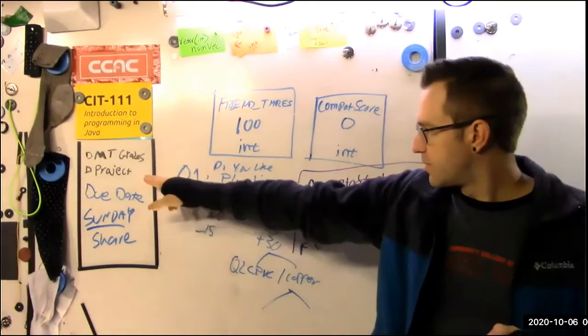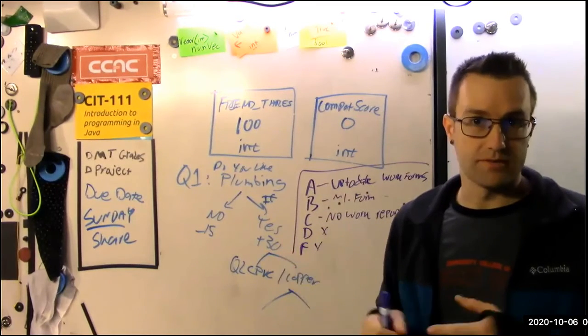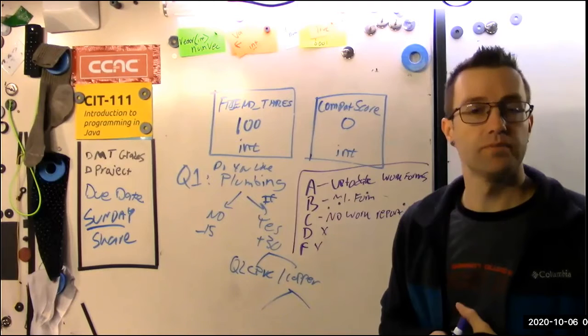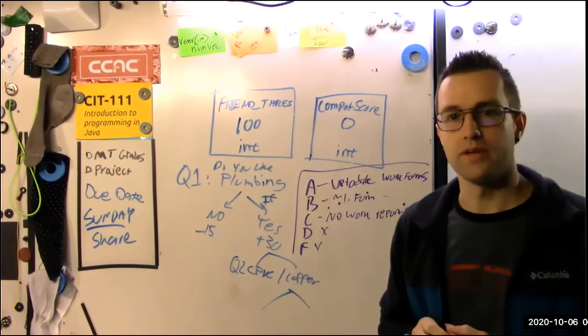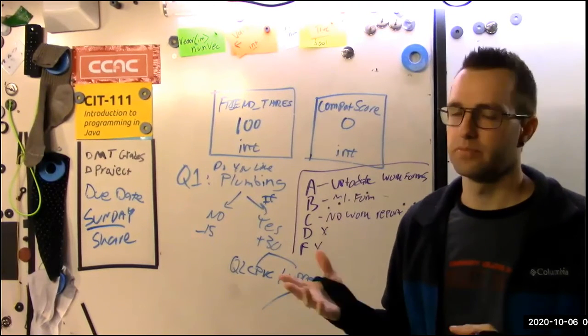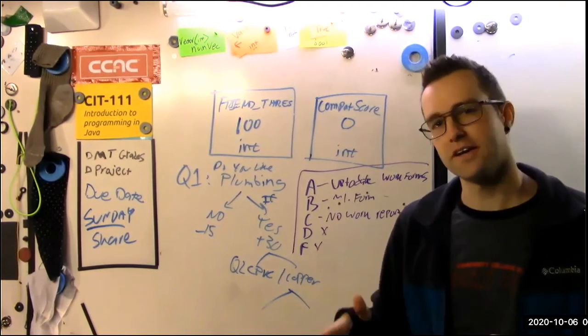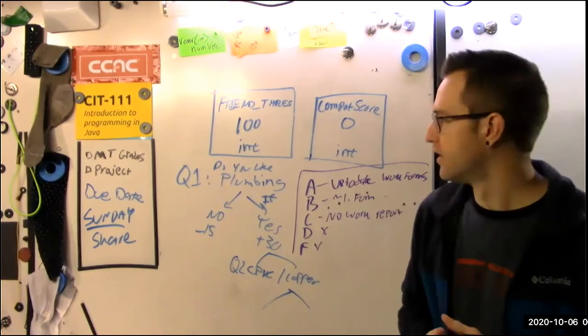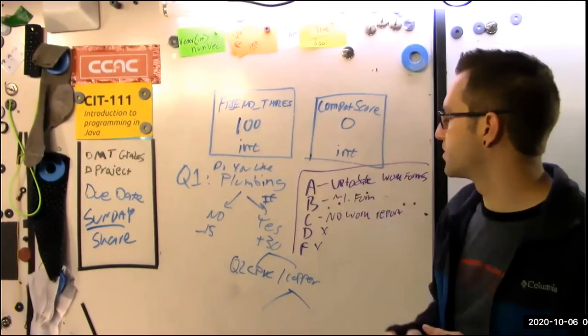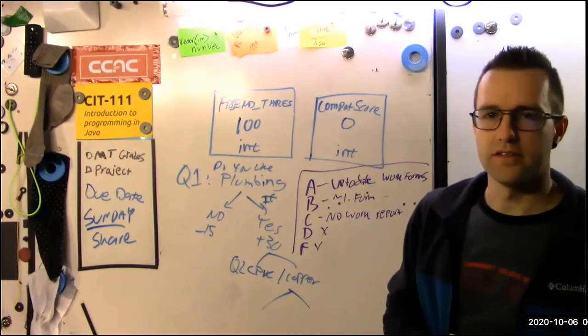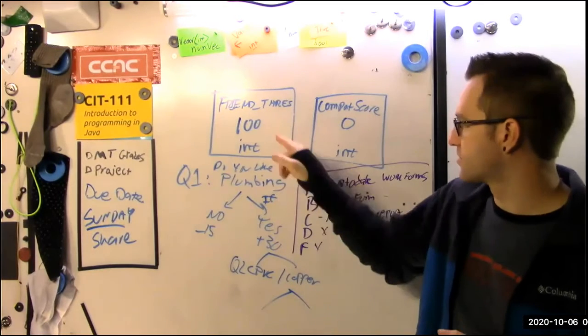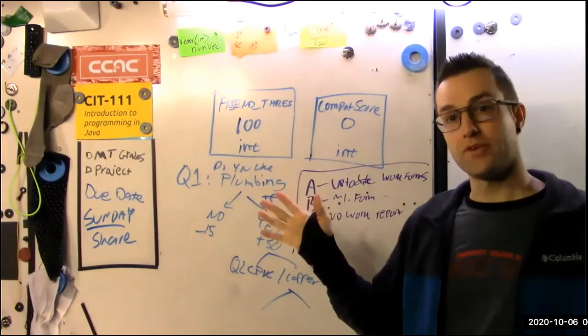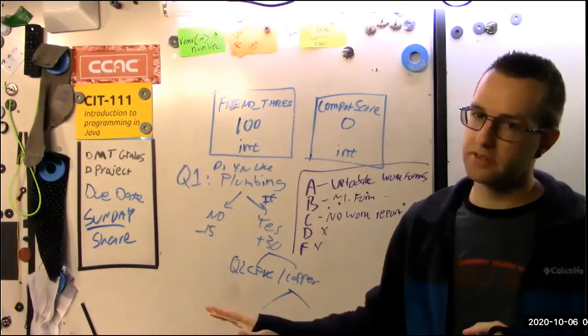Next up is our project for the week. The project is called Might We Be Friends? And it's a chance for you to build an interactive tool in which your program asks the user a series of questions that you use to compute a compatibility score, which at the end of the program, you compare against a threshold to decide we might be friends or maybe not or absolutely not.